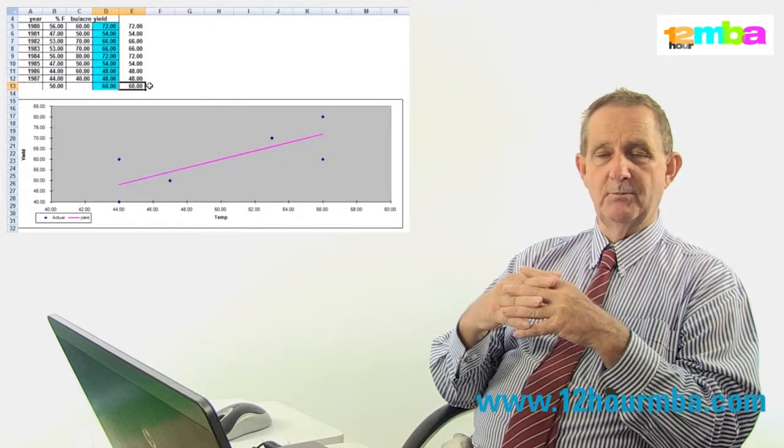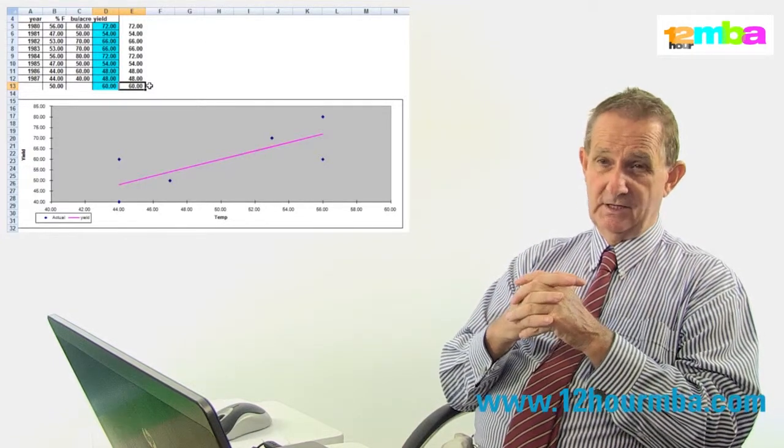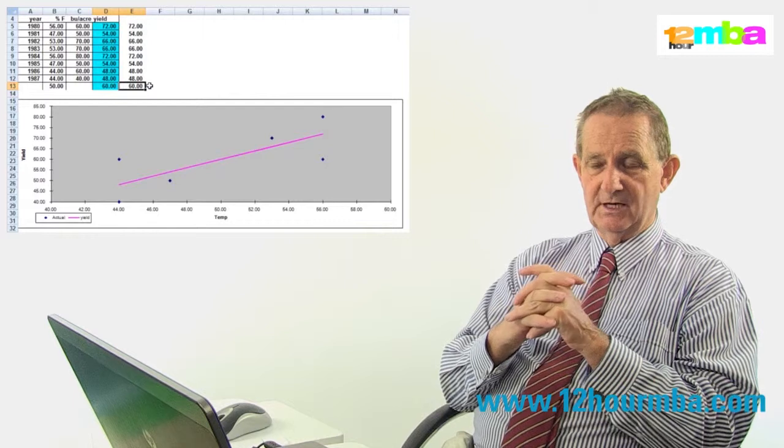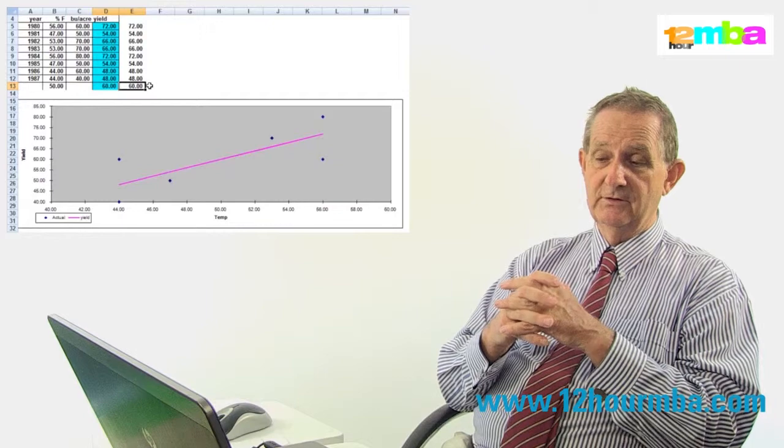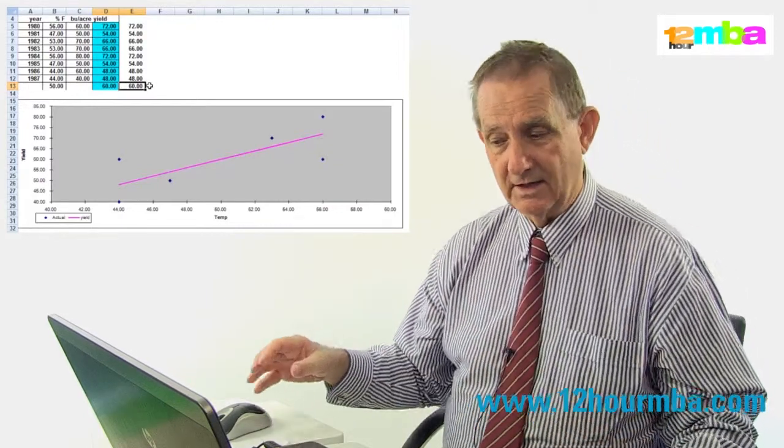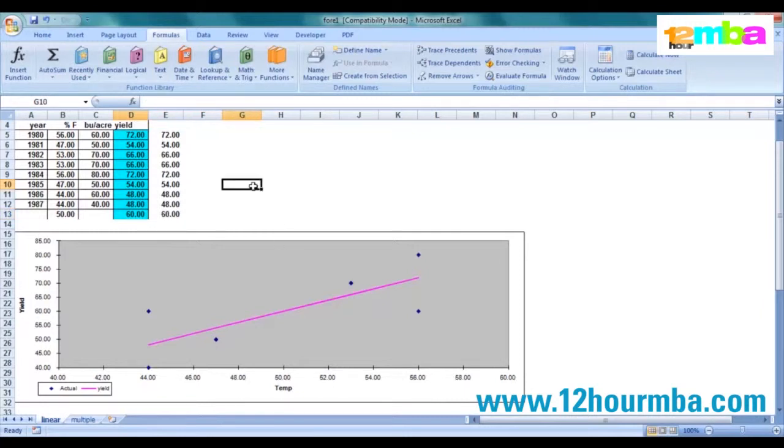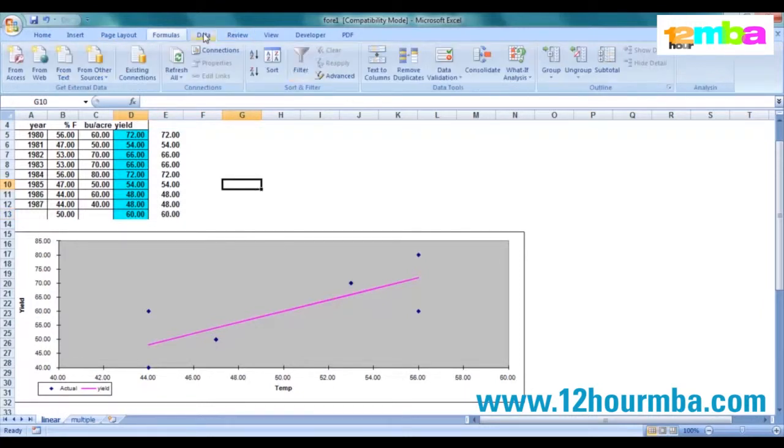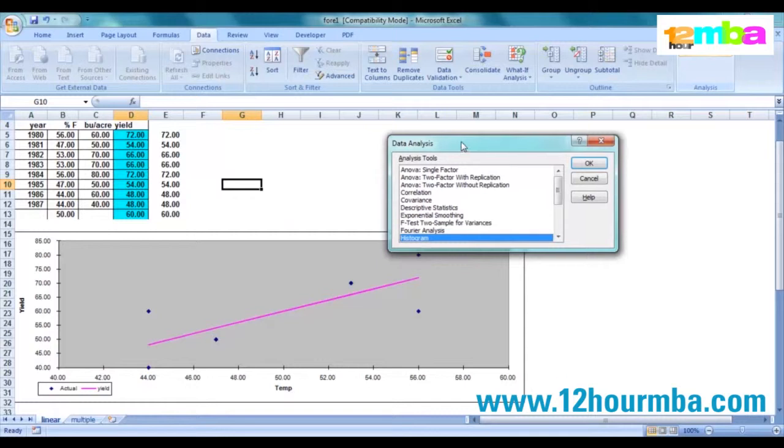So what we want to do is calculate what the r-squared is for this particular forecast. There's two ways of doing it. There is a function that will do it for you, but there is a better technique rather than using the function. If we come over here and go in under Data, remember before when we were doing our simulation we use Data Analysis? If we use that same tool as before...